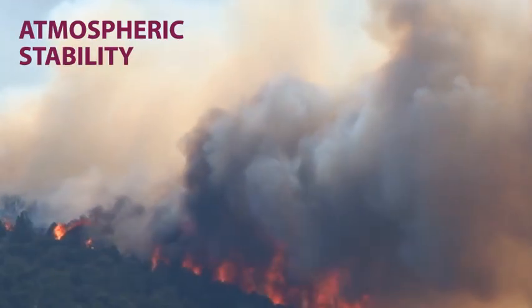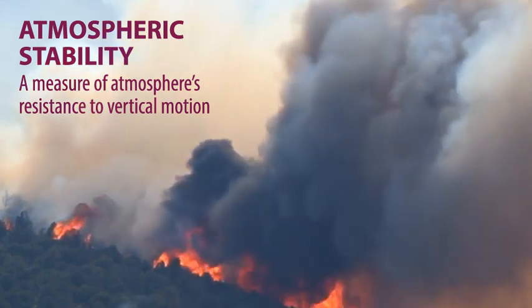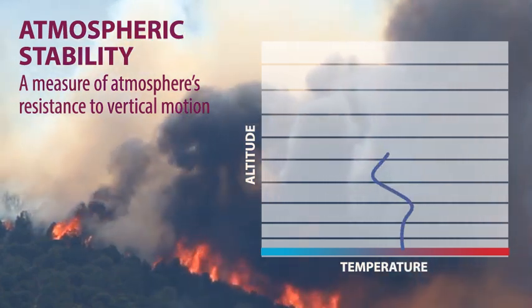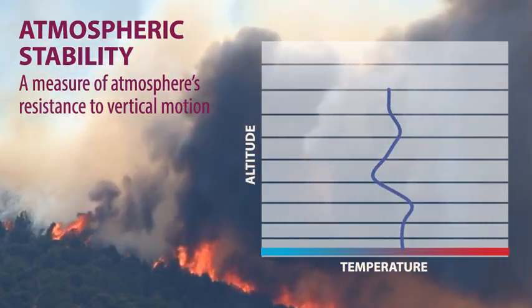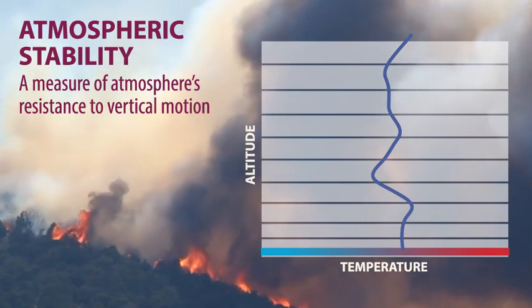Atmospheric stability is a measure of the atmosphere's resistance to vertical motion. Temperature constantly changes throughout the atmosphere, which changes the stability profile. There can be many layers of air, each with a different level of stability.